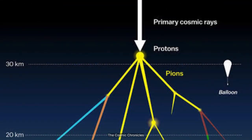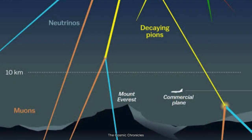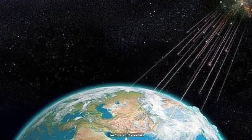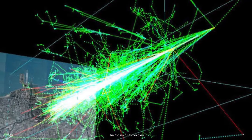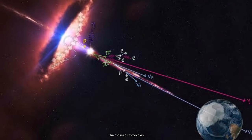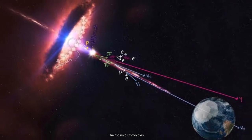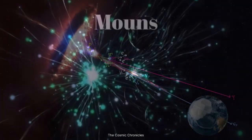However, some particles do reach the surface. When cosmic rays interact with the Earth's atmosphere, they produce secondary particles in a cascade effect. This process contributes to atmospheric chemistry and can create secondary particles like muons.